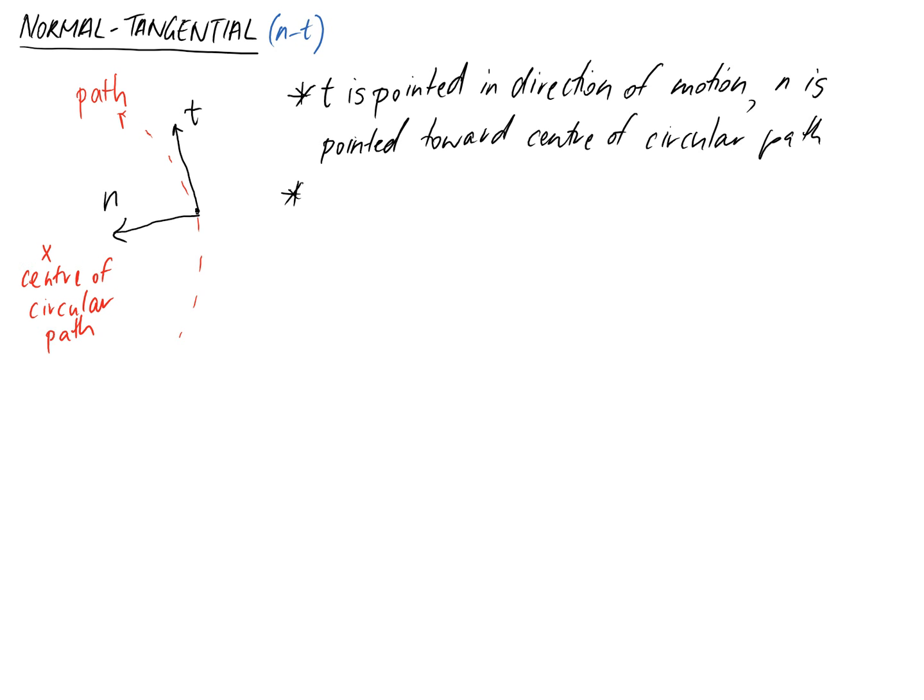Again we have unit vectors associated with this coordinate system. We have et which is in the t direction and we have en which is in the n direction.